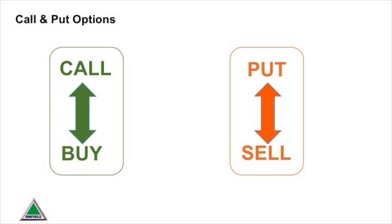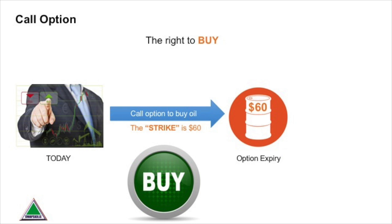The most common terms we hear with options are calls and puts. A call gives the option holder the right to buy an asset, while a put option gives the option holder the right to sell an asset. If you buy a call option, you determine what the underlying asset is — in this case, a barrel of oil — and the price at which you can buy it on a given date, which is the option expiry date. Here we've bought a call option with a strike of $60.